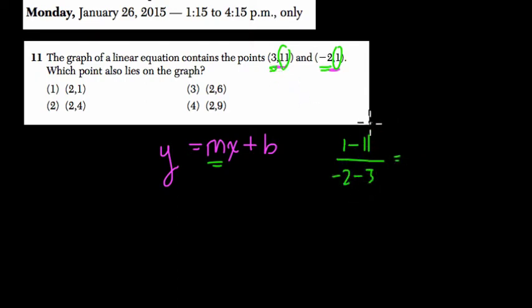1 minus 11 is the opposite of 11 minus 1, it's negative 10. Negative 2 minus 3 gives you negative 5. Then negative 10 divided by negative 5 is positive 2, and that's our slope: m = 2.